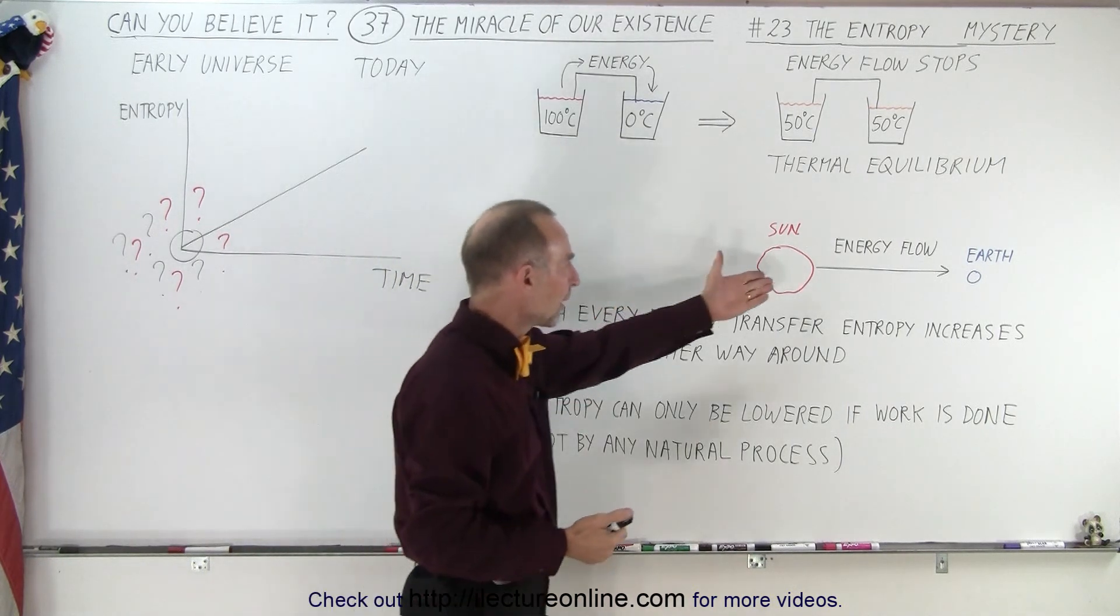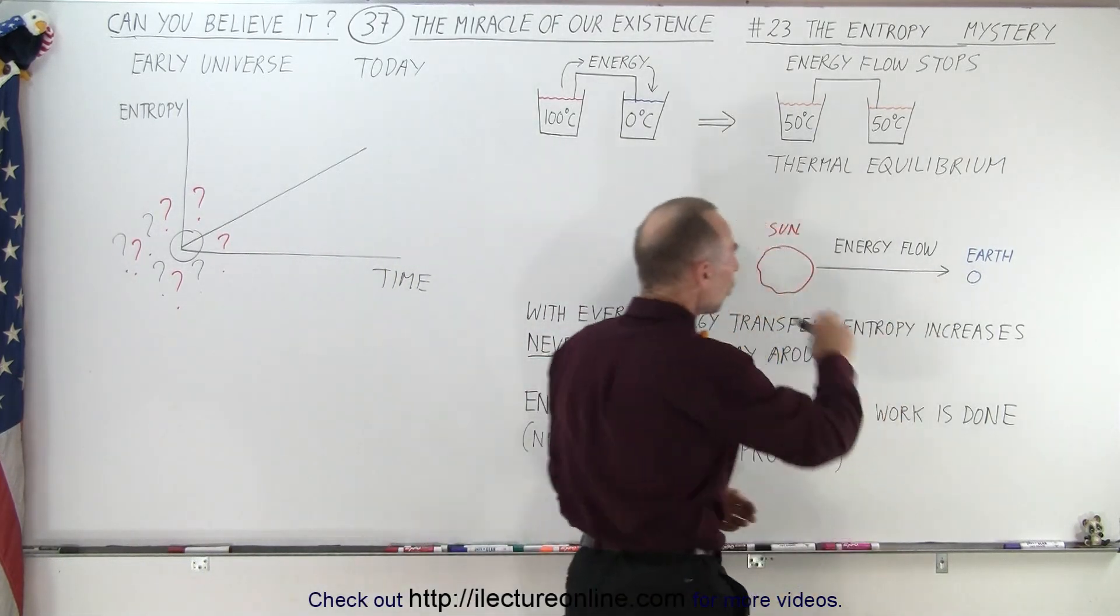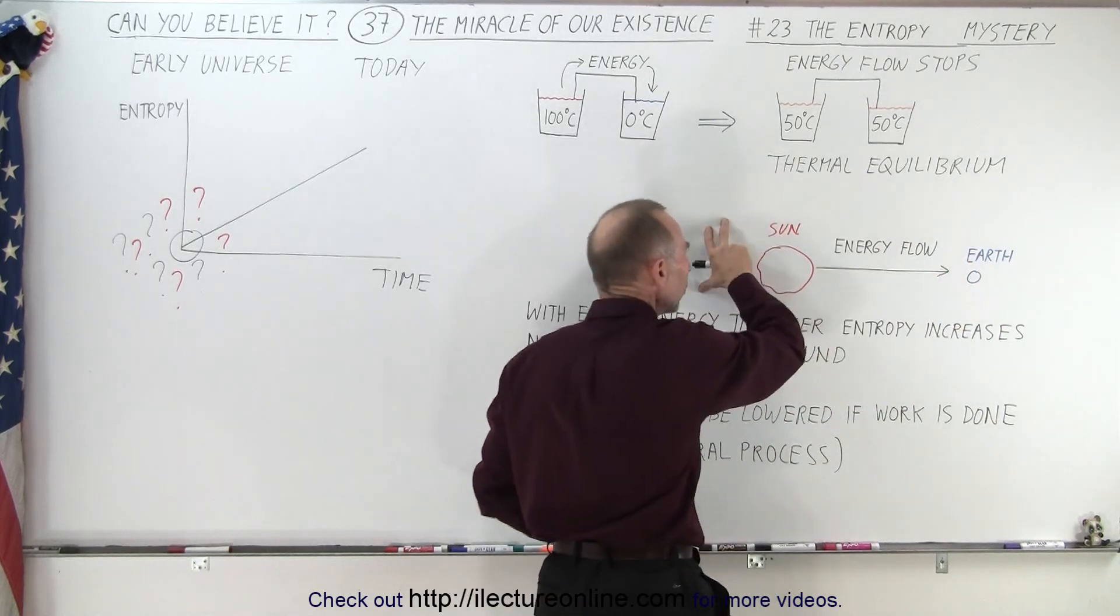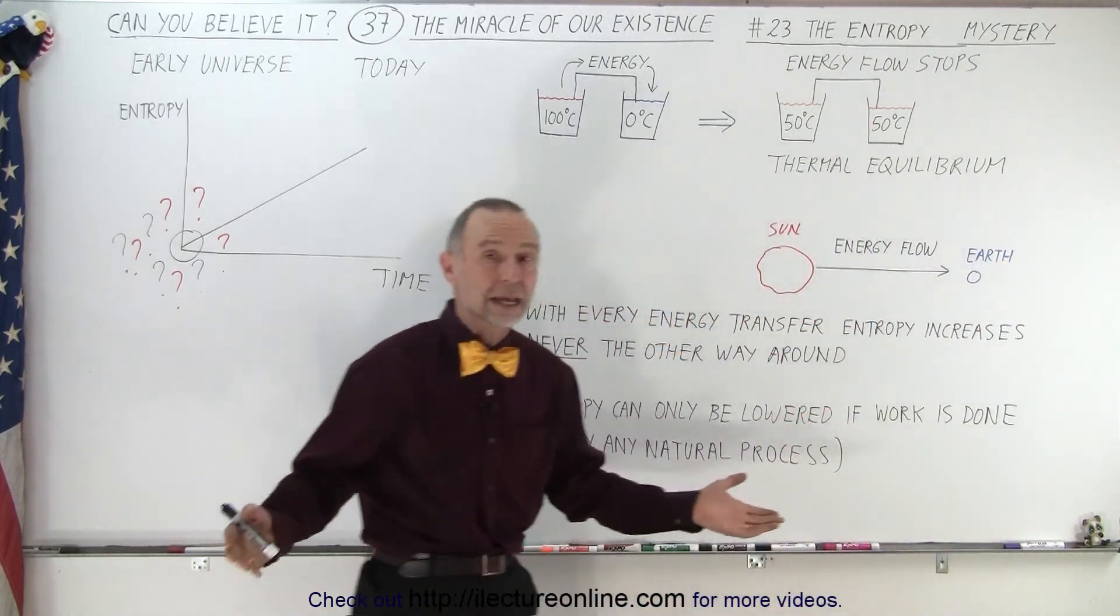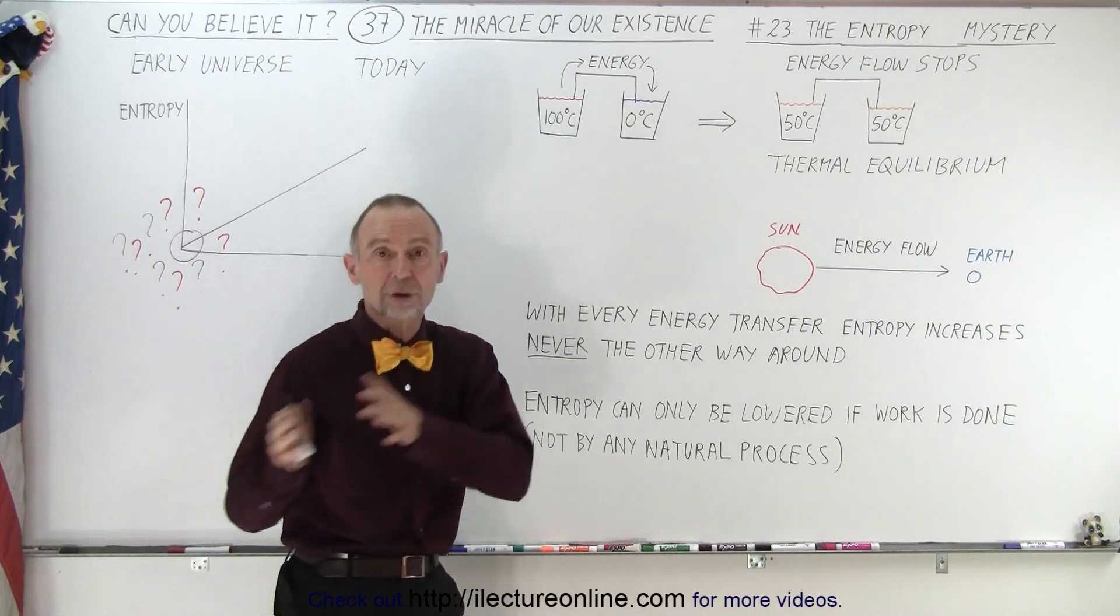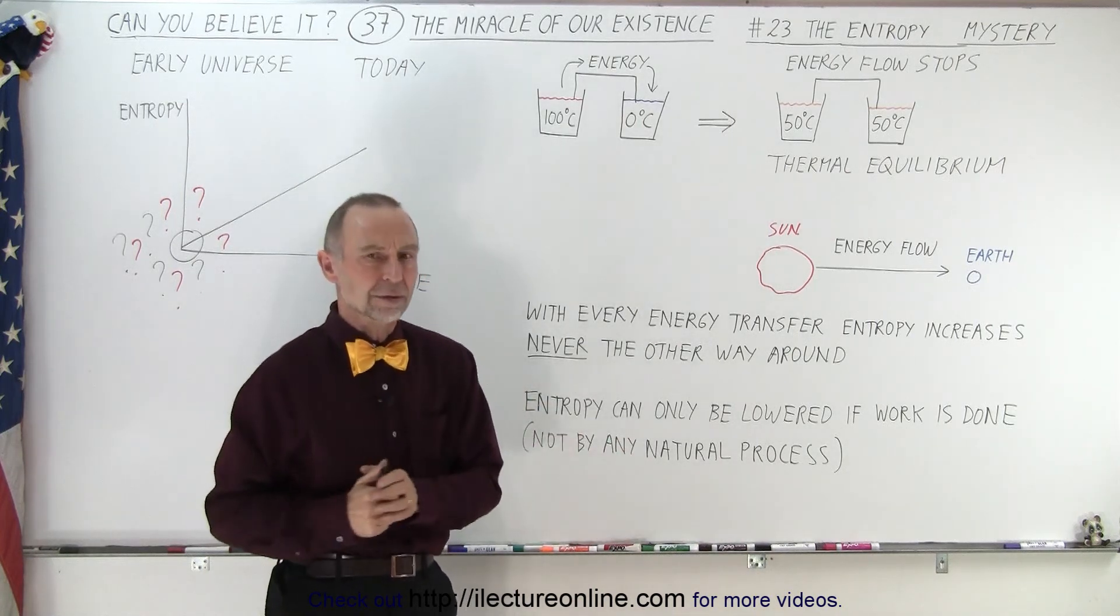Here we have another example. We have the Sun, we have the Earth, and there's always energy flow from where it's hot to where it's cold. That's always going to be the case. Energy will always flow from where it's hot to where it's cold, never the other way around.